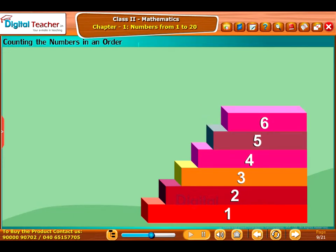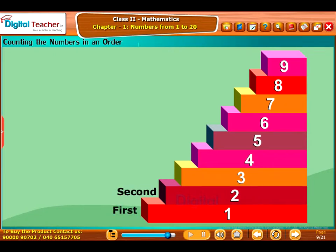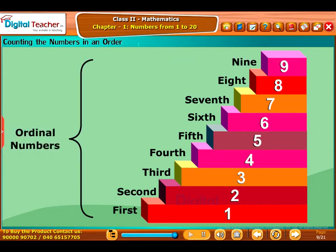number five as the fifth step, number six as the sixth step, number seven as the seventh step, number eight as the eighth step, and number nine as the ninth step, and so on. Here, a number indicates the place as first, second, and third occupied by an item in an ordered sequence. So, these numbers are called ordinal numbers.